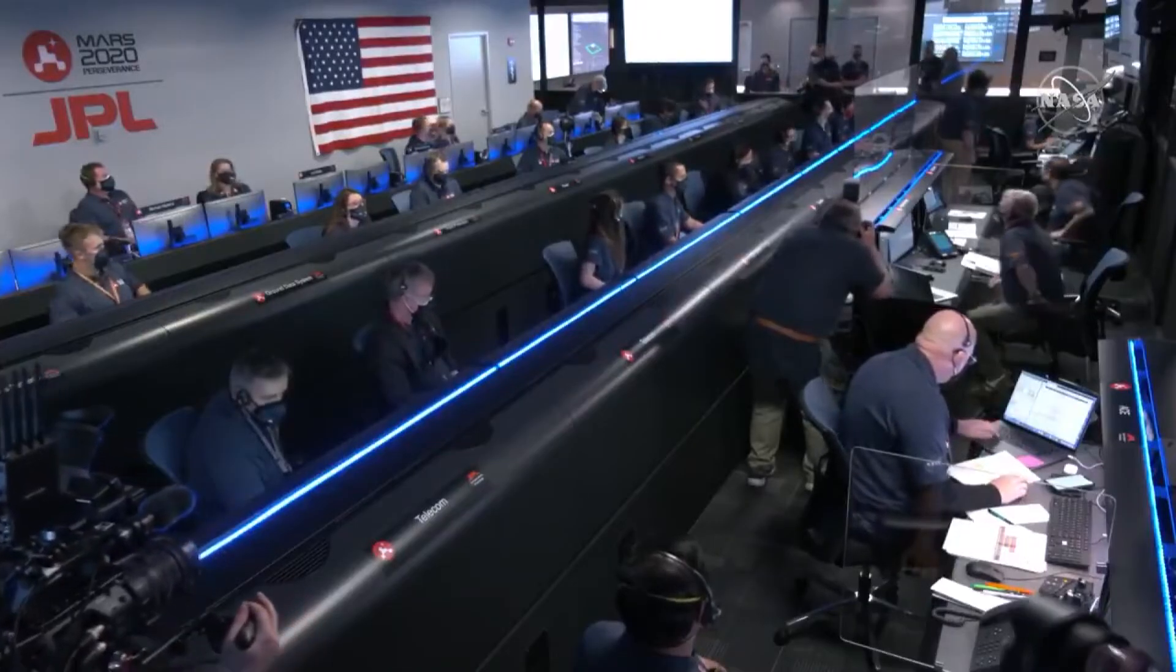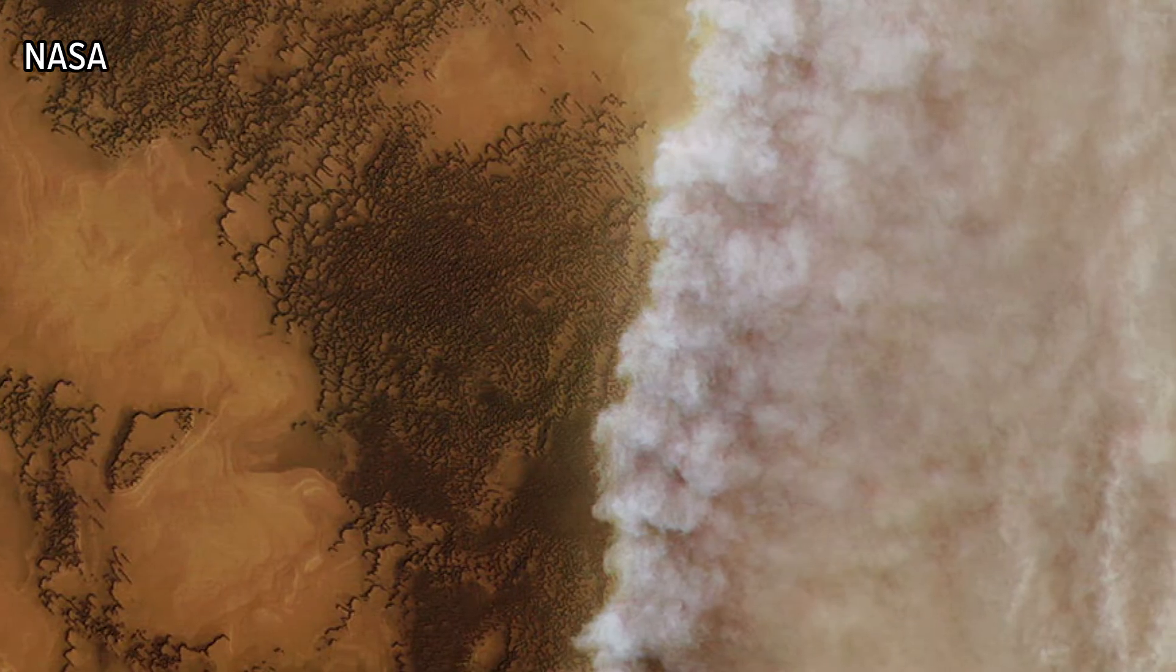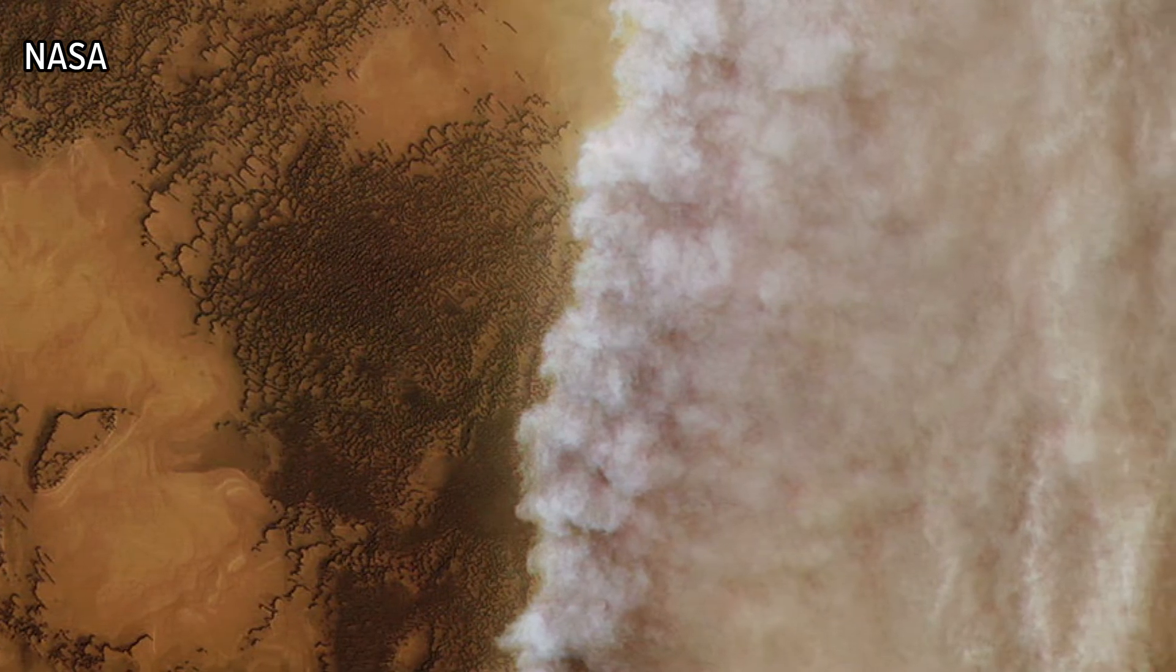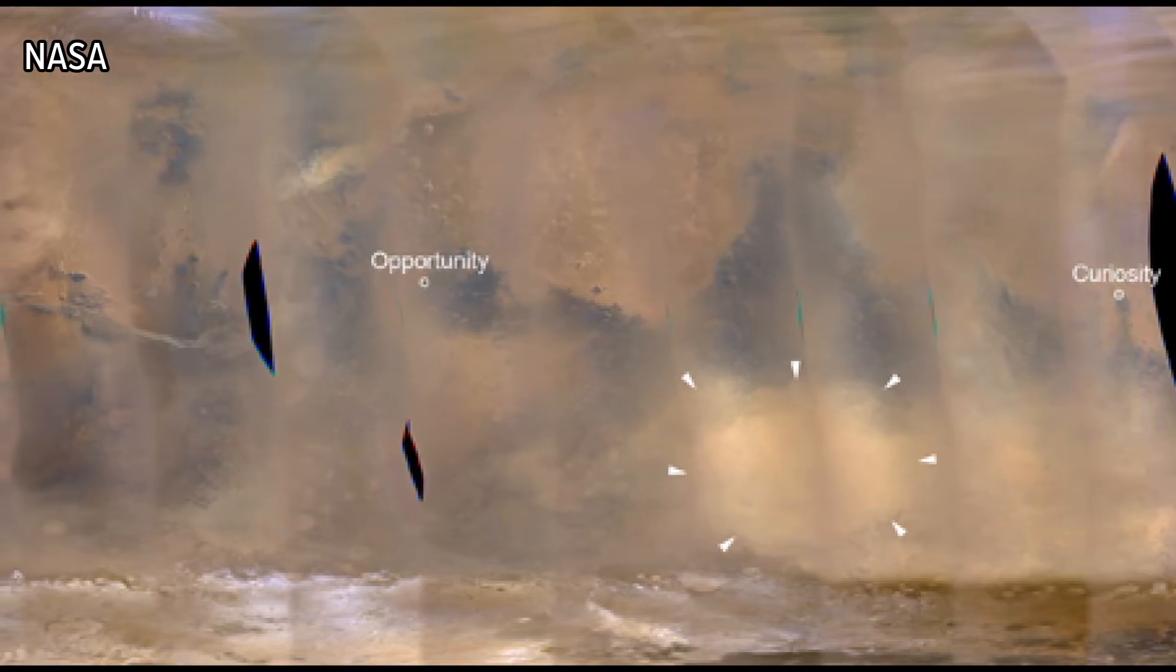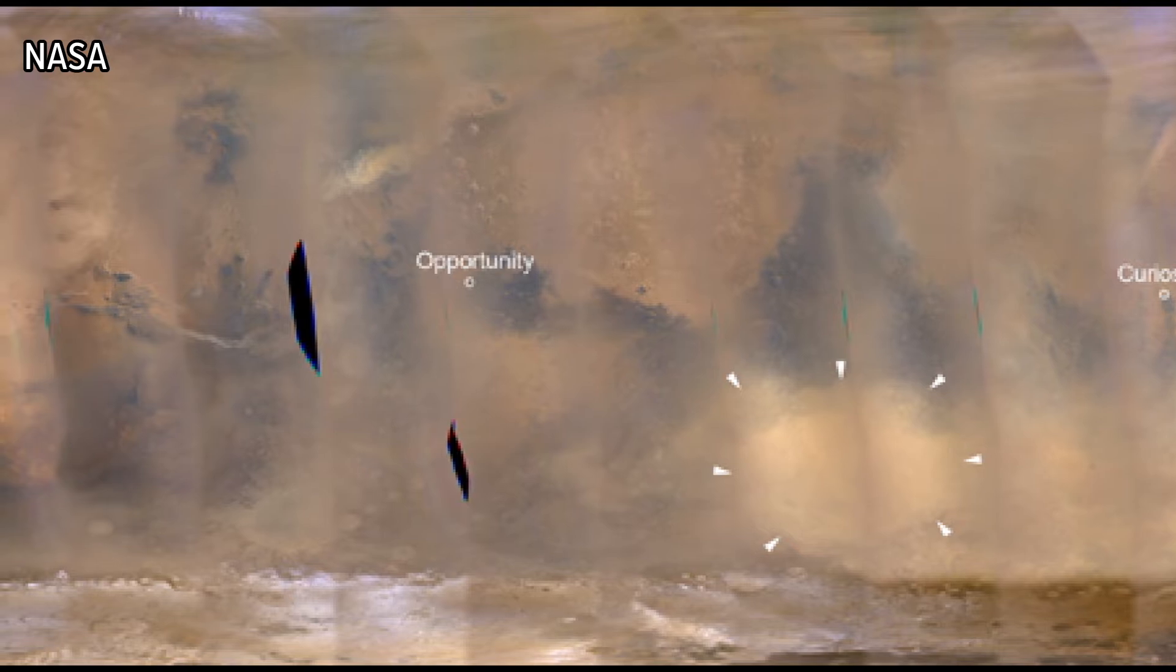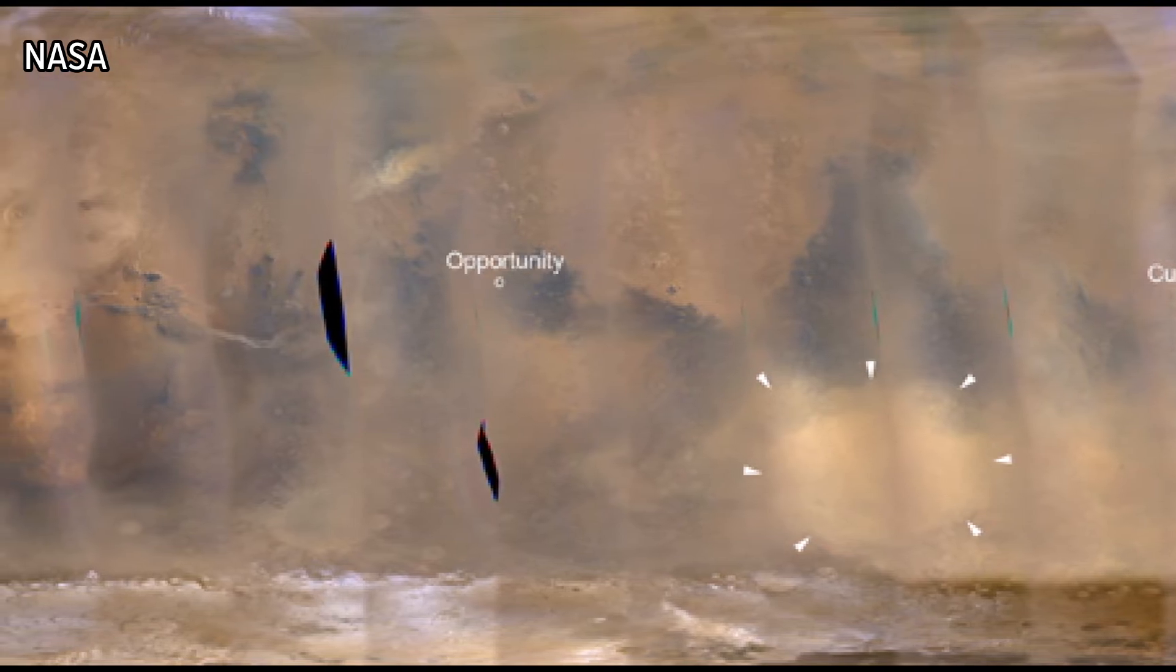According to planetary scientists at NASA, a typical year on Mars can see at least one dust storm that would cover an entire Earth continent and last for weeks. Every few Martian years, or about five and a half Earth years, a dust storm can grow to cover the entire planet.